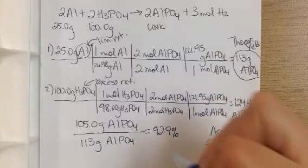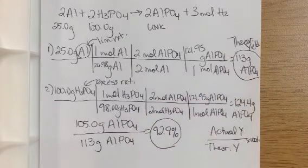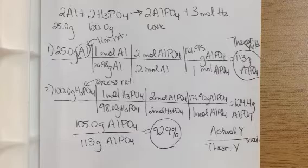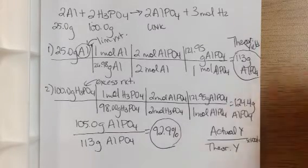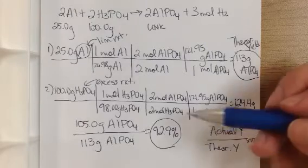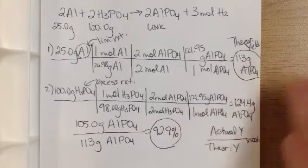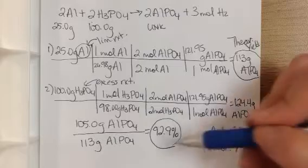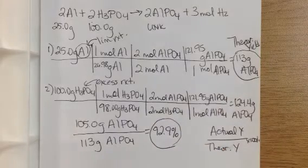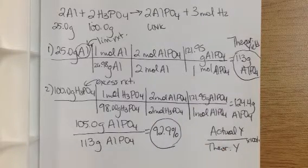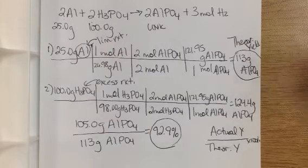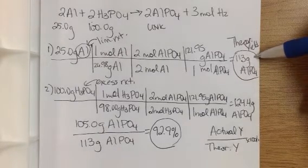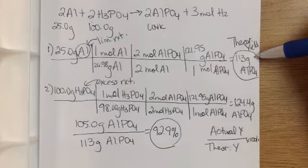So what this number means is that based on the information that I have, based on my starting reactants, my reaction was almost 93% successful. So basically I used up almost all of the stuff that I had, but there was a little bit of something that went wrong. Because if everything went according to plan, my percent yield would be 100% because I would make my theoretical yield in lab as well.